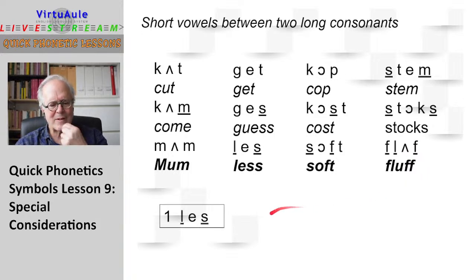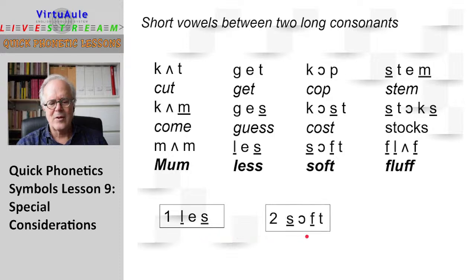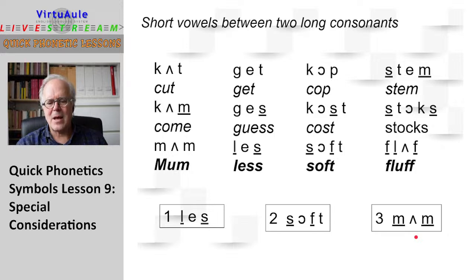Let's try to do the exercise. Read — less. Read — soft. Read — mum. That's what should be written here. We have the long consonant sounds.